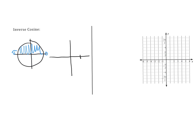Now inverse cosine — similar to before. From the unit circle, inverse cosine has restrictions from zero to pi. The domain is still negative one to one, but the range goes from zero up to pi. The parent function inverse cosine of x has these key points: at negative one the output is pi, at zero it's pi over two, and at one it's zero. It forms this decreasing curve.